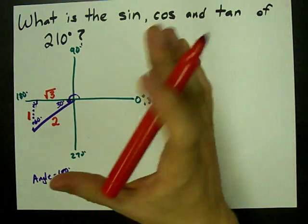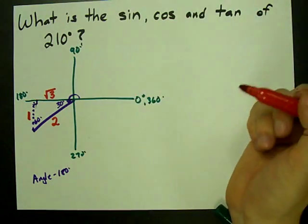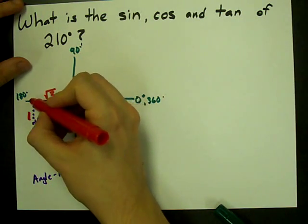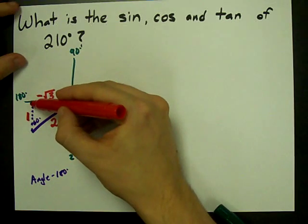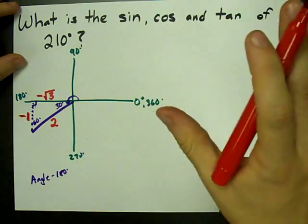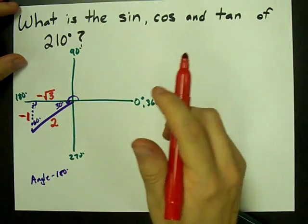Be careful. I want you to make your side lengths negative if you're going to the left or down. This arm goes to the left, so I'm going to call it negative root 3. This goes down, so I'm going to call it negative 1. And the hypotenuse is always, always positive. Keep that in mind.